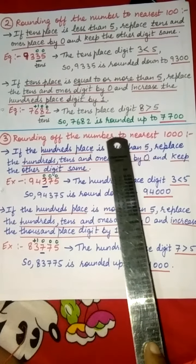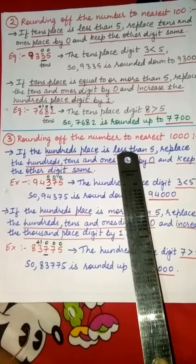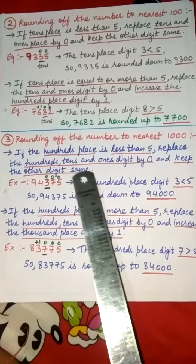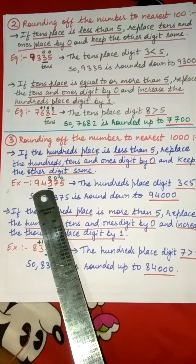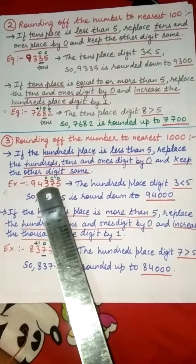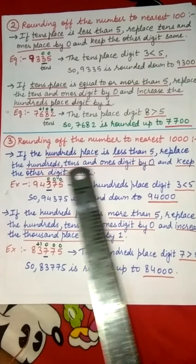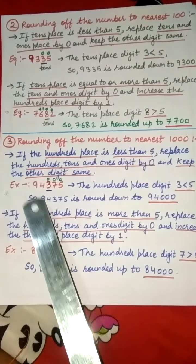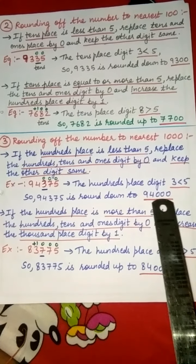Now, rounding off numbers to the nearest thousands. Rule 1: if the hundreds place digit is less than 5, replace the hundreds, tens, and ones digits by 0 and keep the other digits the same. For example, 94,375. The hundreds place digit is 3, and 3 is less than 5. So we replace those digits with 0, and 9 and 4 remain the same. So 94,375 is rounded down to 94,000.